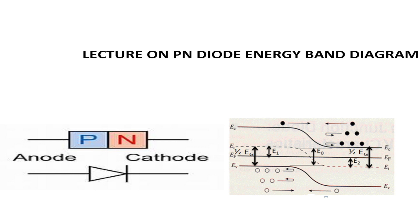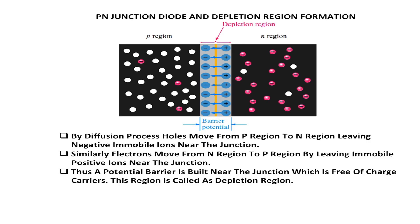First we should know what we mean by a PN junction diode. When we are combining a P type material and N type material together, the holes from P type material move towards the N type material because of its higher concentration region to lower concentration region movement. Similarly, the electrons from N type material move towards the P type material to satisfy the diffusion process. Diffusion process is nothing but the charge carriers moving from higher concentration to lower concentration region.